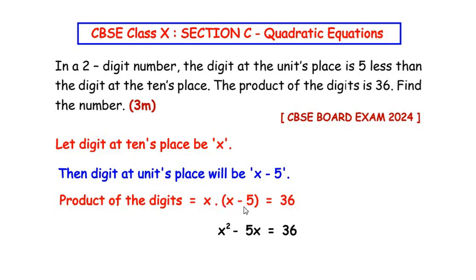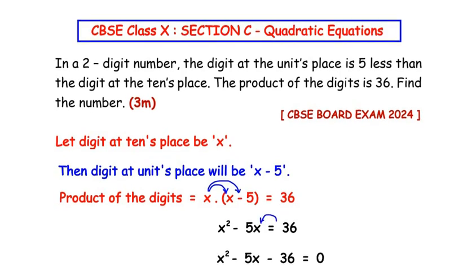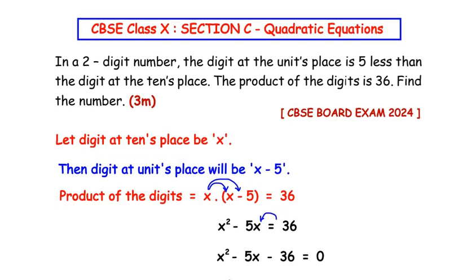Now we expand the brackets on the left-hand side: x multiplied by x gives x squared, and x multiplied by negative 5 gives negative 5x, so we have x squared minus 5x equal to 36. Taking 36 to the left-hand side, we get x squared minus 5x minus 36 equals 0.